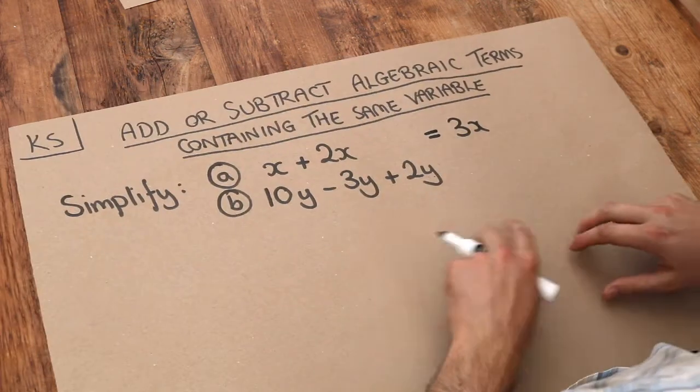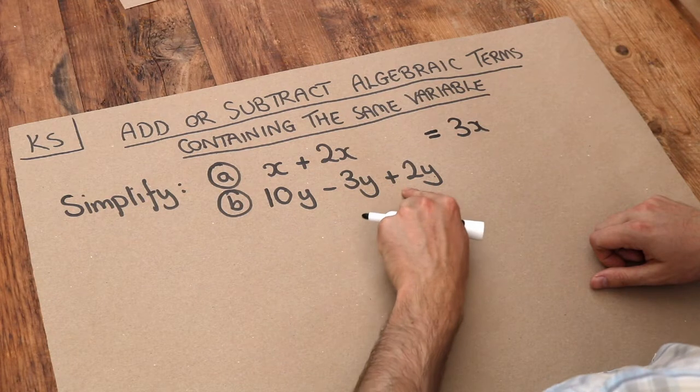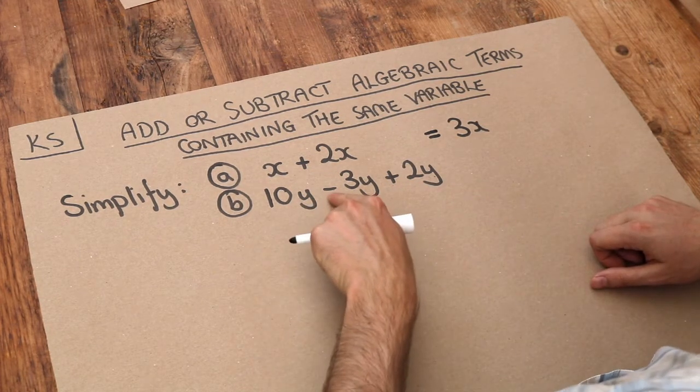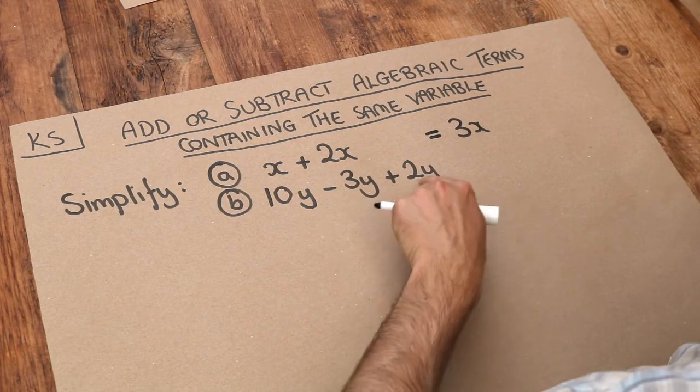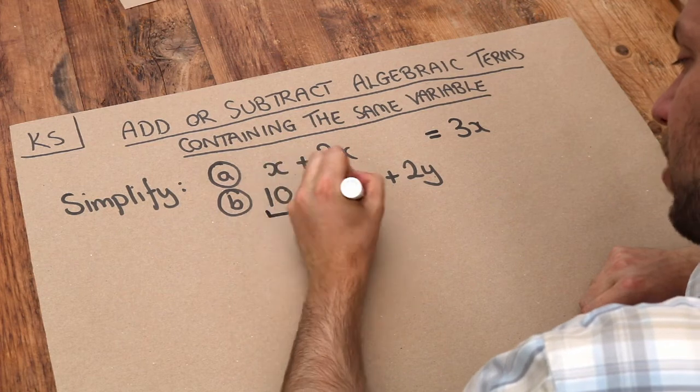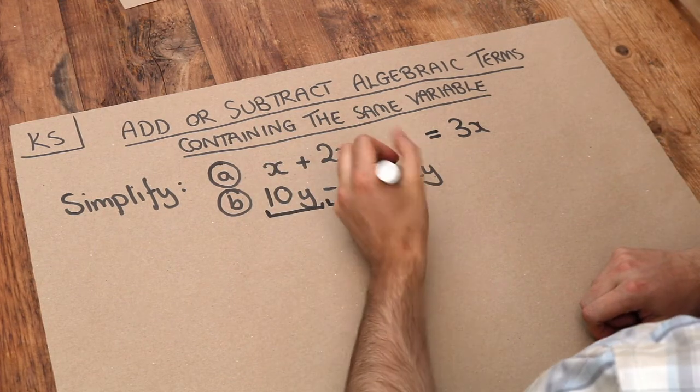And what about the second one? We've got 10y minus 3y plus 2y. So we can think of this as ten lots of y, we subtract three lots of y, and then we add two lots of y. Some people find it helpful to underline each of the bits of it including the symbol in the front.